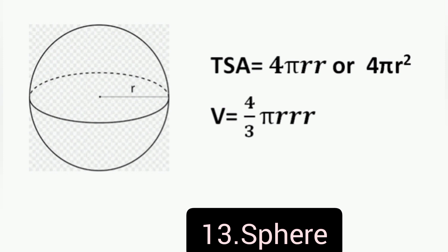Surface area of sphere is equal to 4 times pi times radius squared. Volume of sphere is equal to 4 over 3 times pi times radius cubed. Thank you for this review, see you next time, ciao.